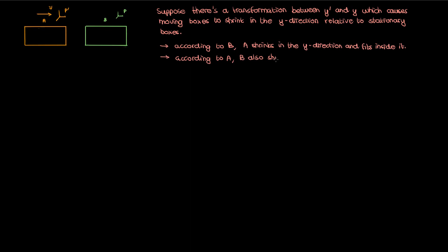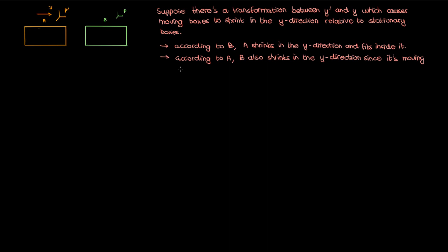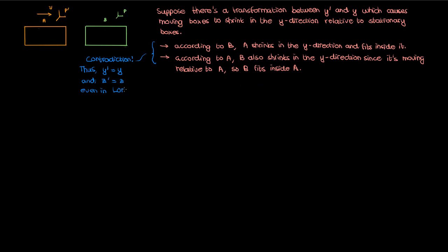If that were the case, then according to box b, box a would be shrunken in the y direction and would be able to fit inside box b. However, according to box a, box b is also moving towards it, so box b would be shrunken in the y direction relative to box a as well, and would be able to fit inside box a. So both boxes are simultaneously smaller than each other and able to fit inside each other, which is simply not possible. There's no relativity of simultaneity here to save us — events spatially separated in the y direction are perceived as simultaneous in both reference frames. Therefore, the y' and y coordinates must be the same.